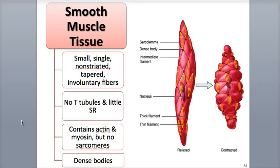Smooth muscle also displays a greater ability to stretch and shorten compared to the other muscle tissues, and still be able to contract in these different states. A phenomenon called the stress-relaxation response is observed in smooth muscle, which is where the smooth muscle fibers, upon being stretched, first contract and generate tension, then after a minute, begin to relax. This feature helps the smooth muscle in the walls of hollow organs maintain a stable pressure on their contents.